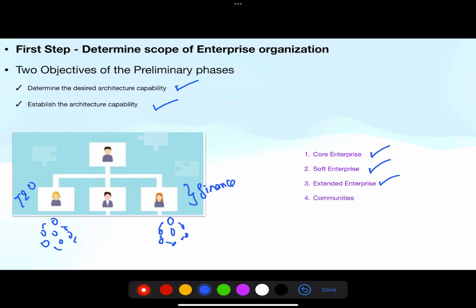Extended enterprise are the units outside the scope of the enterprise. Next is stakeholders who are impacted due to the architecture initiative are categorized as communities. These could be sales team, end users, or customers. And finally, applying governance to this initiative impacts the governance group. So that's the first step: to identify the scope of the architecture work and check on other groups like Core, Soft, Extended, Communities, and Governance.